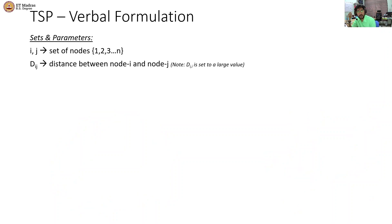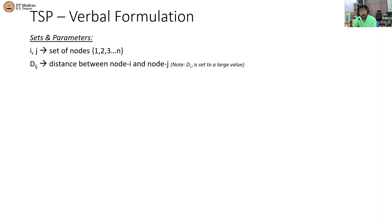To formulate any problem, we first define the sets, the parameters, the decision variables, and then the objective function and constraints. The approach I suggest is to do it verbally first, then do the mathematical notation. Verbally, what are my sets? My sets are basically the nodes that I have to visit, and since I am proposing routes, I must be able to define arcs — i to j. So that is my first set.